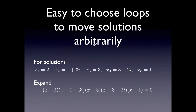The first step is to show that we can build loops that do anything we want with the solutions, and the reason is very simple. For any trajectory we want the solutions to follow, if we look at some point along this trajectory, we can build the polynomial equation that will give these roots exactly as presented here. All you need to do is expand this expression to find the coefficients, and if we move the solutions continuously, the coefficients will move continuously. If at the end of the trajectory we return to the same set of solutions, the coefficients will return to their original value. So we can build a loop that does whatever we want with a solution.